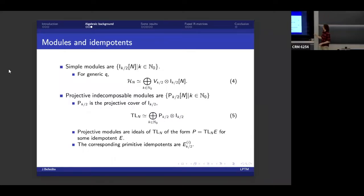Now that I have simple modules, I need more than this. I also need projective and decomposable modules. So they are also indexed by an integer k. Now, if you're not familiar with what projective modules are, it's very simple. We're looking specifically at ideals of the algebra that are of the form TL_N acting on some idempotent. So in a sense, it's just a module that is cyclic generated by an idempotent.